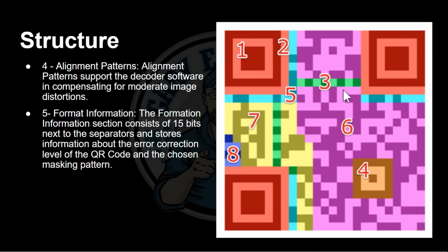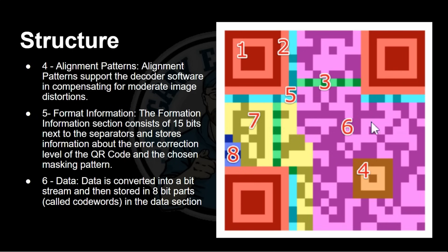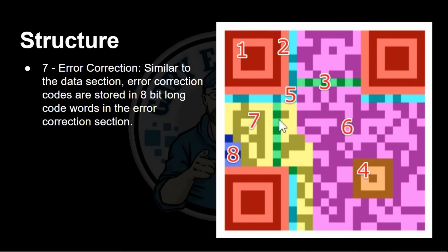Number five is the format information — the blue encoded area around the top-left, under the top-right, and next to the bottom-left finder patterns. These aren't actually blue on the real image, just black-and-white pixels, but they tell the reader what type of information is inside the QR code, including what type of error correction is used. Number six — the largest area, shown in purple — is where the actual data is stored. The timing pattern cuts across the middle, but the QR reader accounts for that.